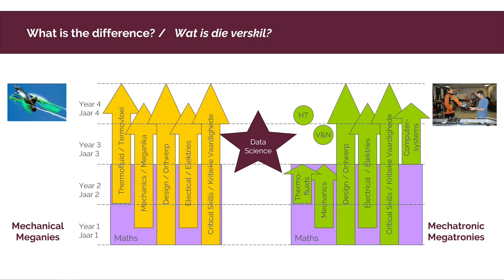In the mechatronic program, the thermofluid and mechanics streams are slightly shorter, because mechatronic students don't do all the advanced modules in the third and fourth year. Instead, they have a specialized stream in computer systems where you learn how to design a microcomputer, build it, and implement it in a mechatronic system. The microcontroller takes measurements from sensors and uses software you program to control the mechatronic system through its sensors and actuators.